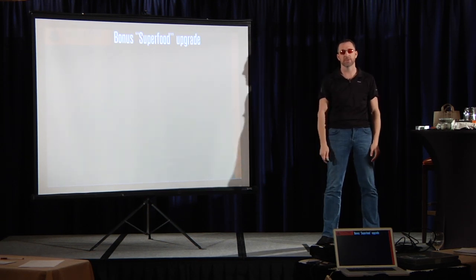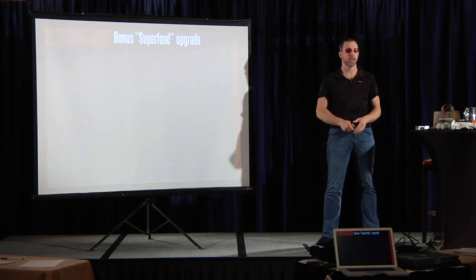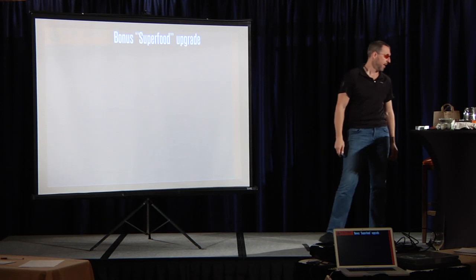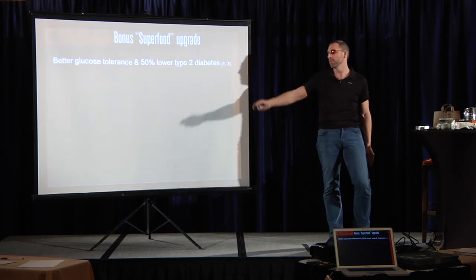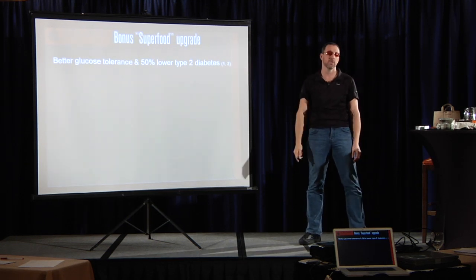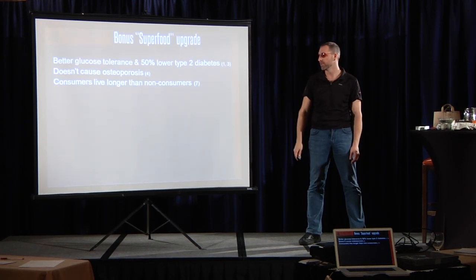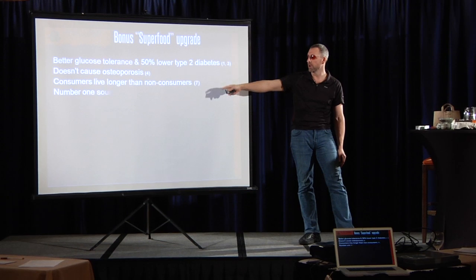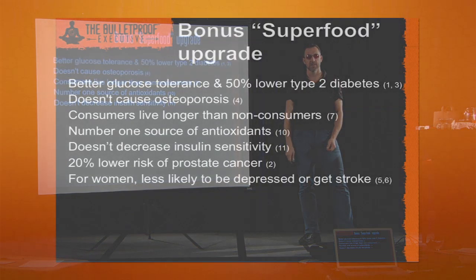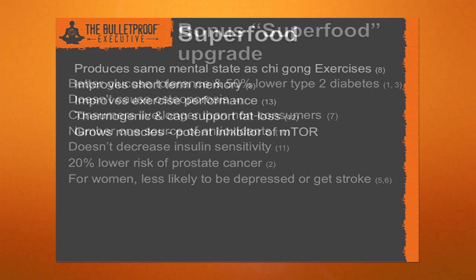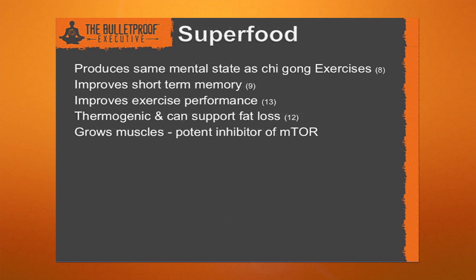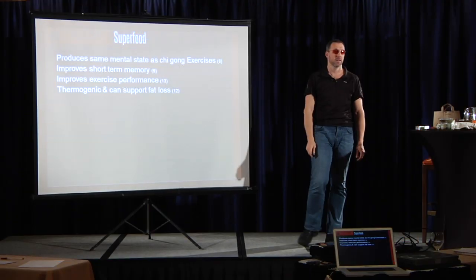This has not been in the presentation before. People talk about super foods all the time. I have a prize for the person who can tell me what this is. This super food will improve your glucose tolerance, lower your type 2 diabetes by 50%, not cause osteoporosis. People who take it live longer. Number one source of antioxidants in your diet in the West. 20% lower chance of prostate cancer for men. For women, less likely to be depressed or get stroke. And there's more.